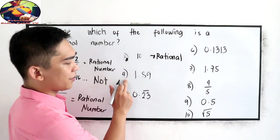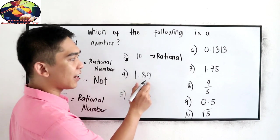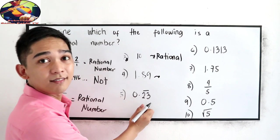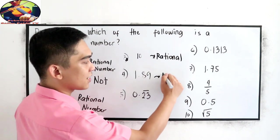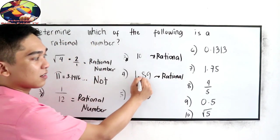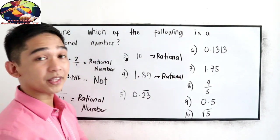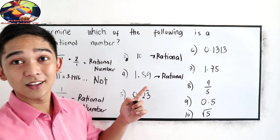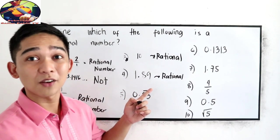Number 4, 1.89. Rational number or not? It is a rational number. Why? Because 1.89 can be written as a rational number in rational form.